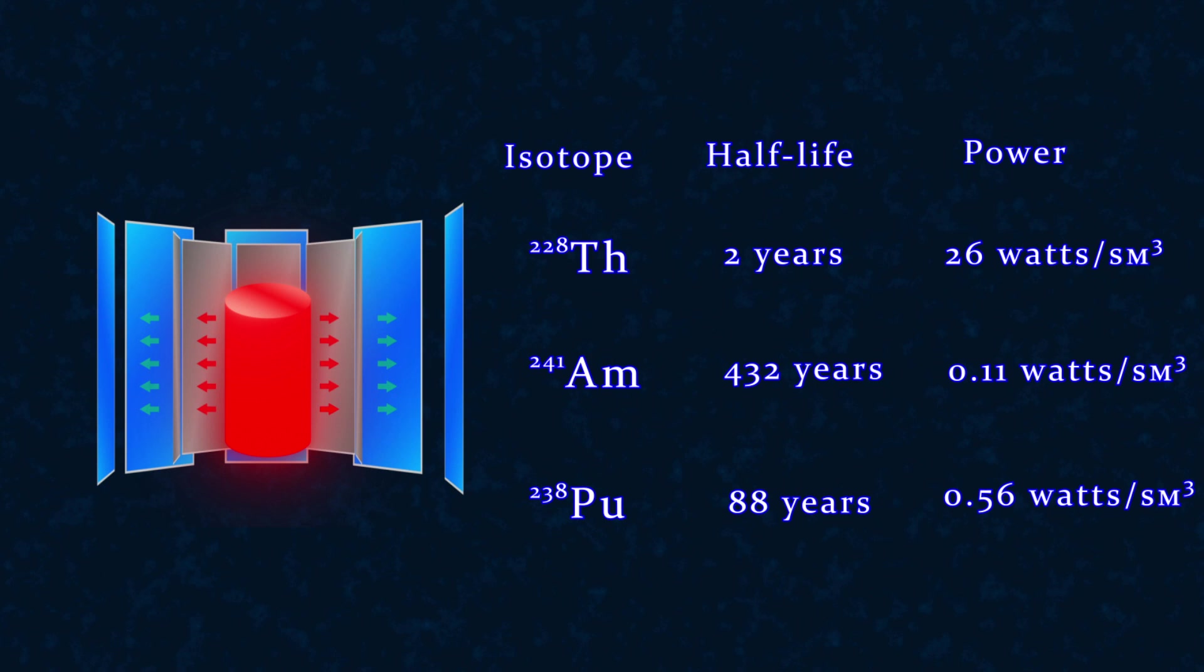However, the most promising is considered the golden mean in the form of plutonium-238 with a half-life of 88 years and energy release of 0.56 watts per gram. In this case, the output electrical power should be about 10 watts.